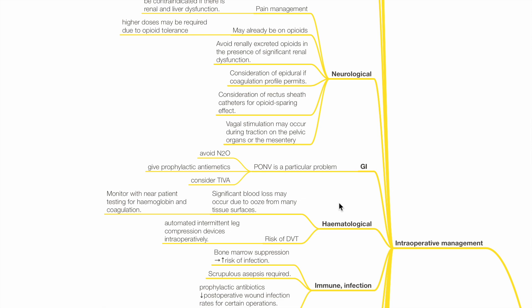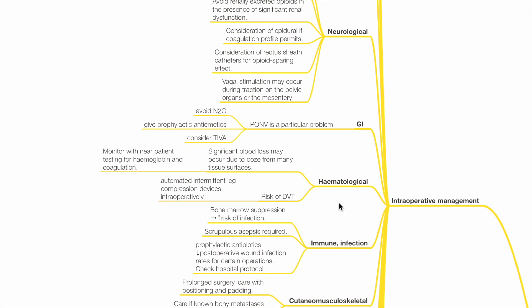GI. PONV is a particular problem. Avoid nitrous oxide. Provide prophylactic antiemetics and consider TIVA.